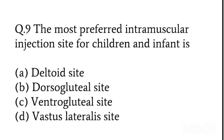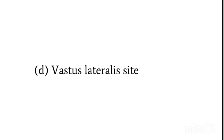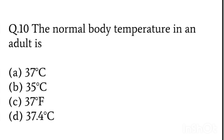The most preferred intramuscular injection site for children and infants — options are: deltoid, dorsogluteal, ventrogluteal, vastus lateralis. Which muscle is it? We always give injections to children at the vastus lateralis site.